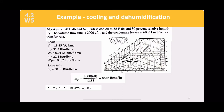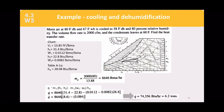Example for cooling and dehumidification: Moist air at 80°F dry bulb and 67°F wet bulb (State 1) is cooled to 58°F dry bulb and 80% relative humidity (State 2). Volumetric flow rate is 2000 CFM and the condensate leaving the coil is at 60°F. Find the heat transfer rate. You are given two points for State 1 to locate data on the psychrometric chart.